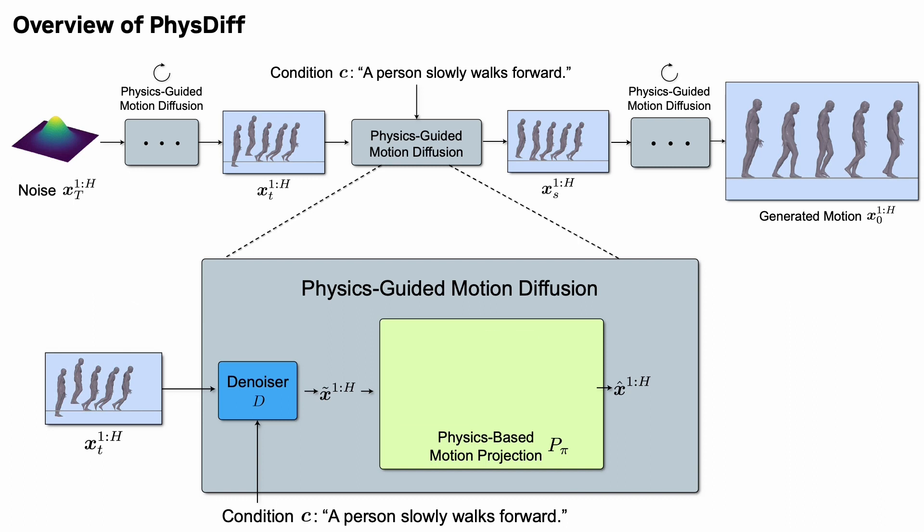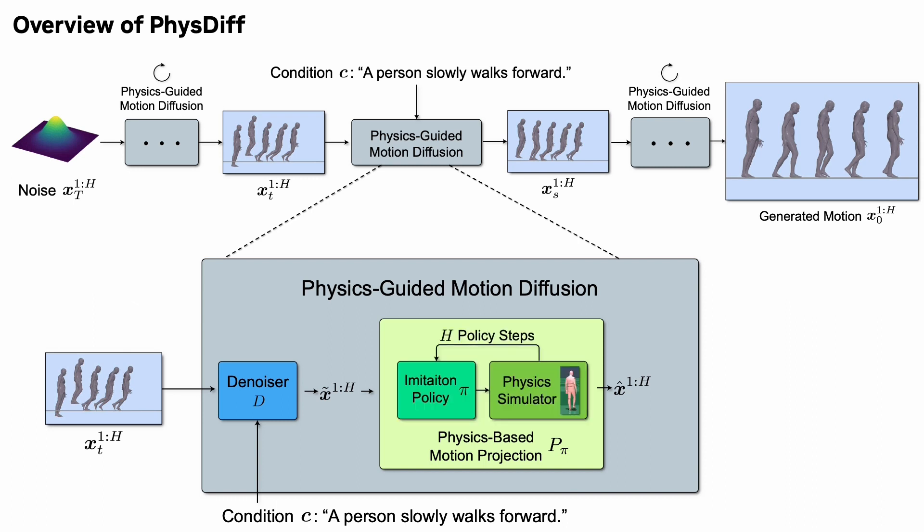Specifically, the projection module uses a motion imitation policy to control a character in a physics simulator to mimic the input motion and enforce physical constraints. The motion produced by the physics-based projection module is then used to generate the motion for the next diffusion step and further guide the diffusion process.